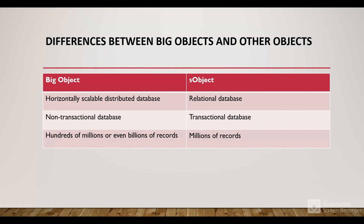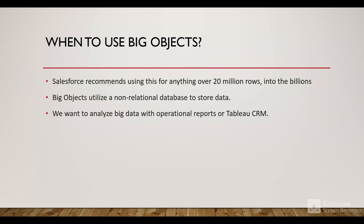Salesforce recommends using a big object if a specific object will have more than 20 million rows and that number will grow far beyond 20 million. Big objects utilize a non-relational database at the backend. If you want to analyze that big data with operational reports or Tableau CRM — previously known as Einstein Analytics — to find patterns, you can use a big object.